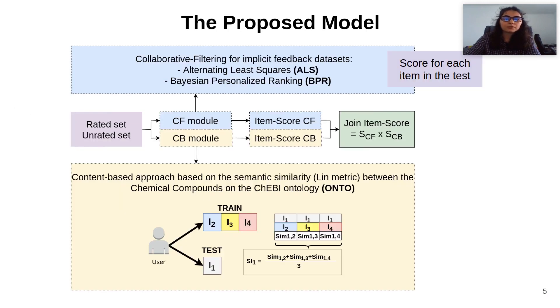From the collaborative filtering module, through ALS or BPR, we obtained a score for each unrated item. For the content-based module, we developed a new algorithm called ONTO, based on ontologies.